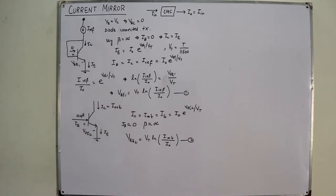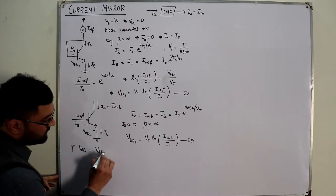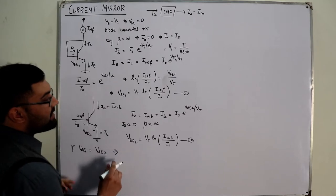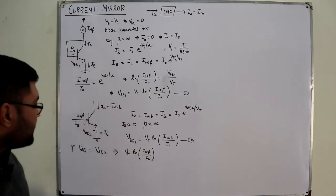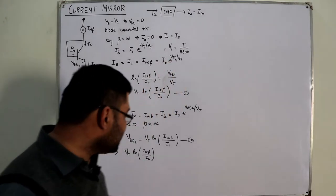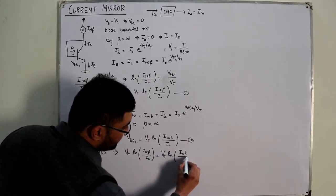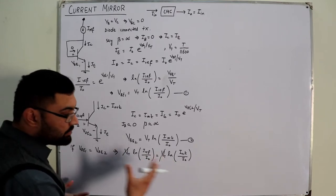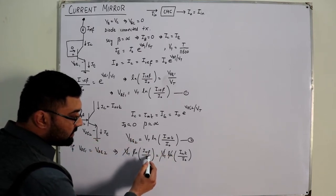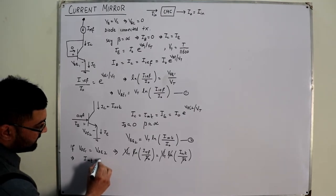Now, if I set VBE1 equal to VBE2, then VT · ln(I-reference / I₀) = VT · ln(I-out / I₀). The VT cancels out, then taking the anti-log on both sides and multiplying both sides by I₀, we get that I₀ cancels and therefore I-out equals I-reference. This is the key result we were building toward.